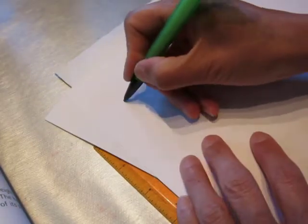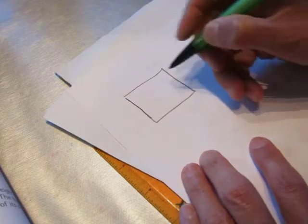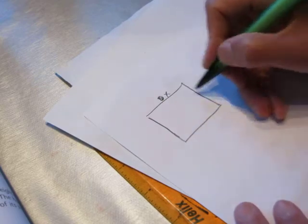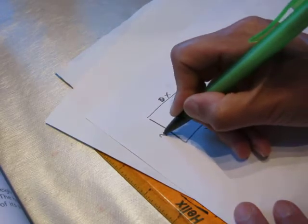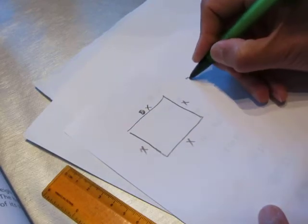So we have a square. This side, this side, let's say x, x, x, x. Four sides together is 32.